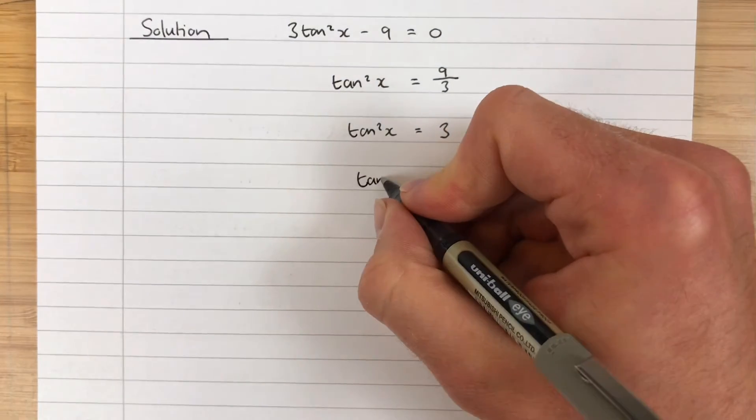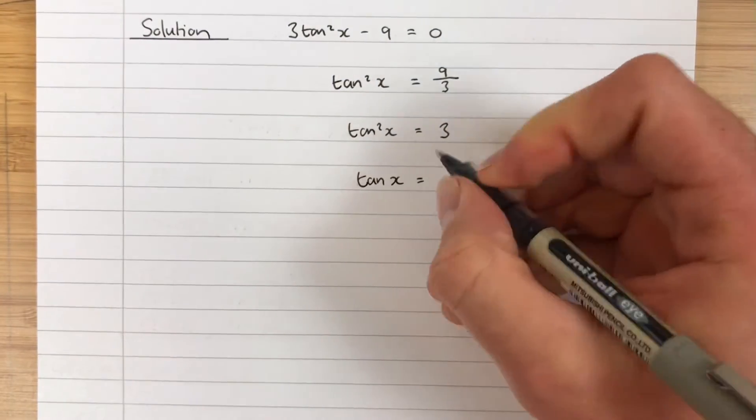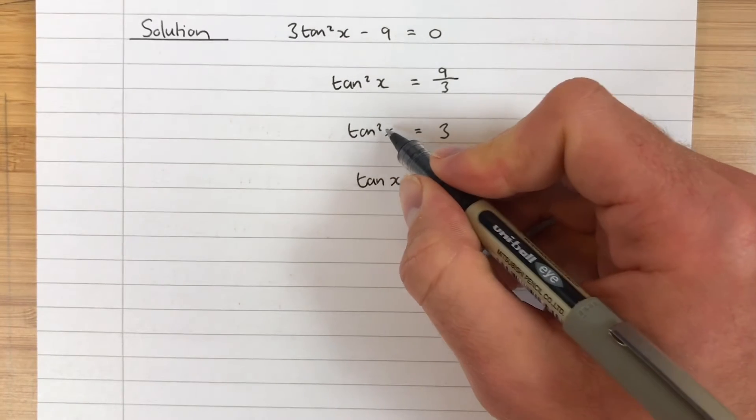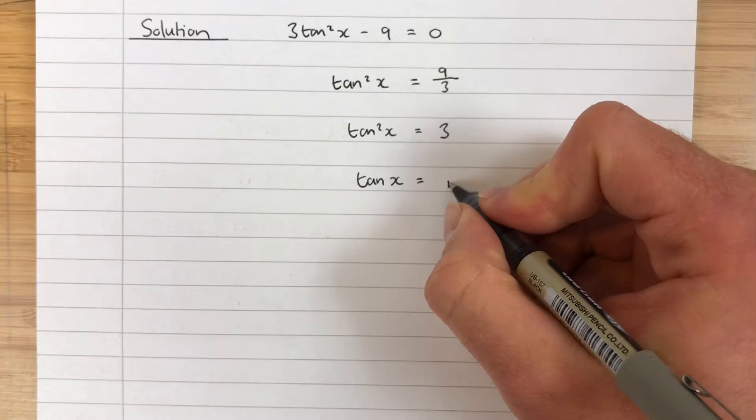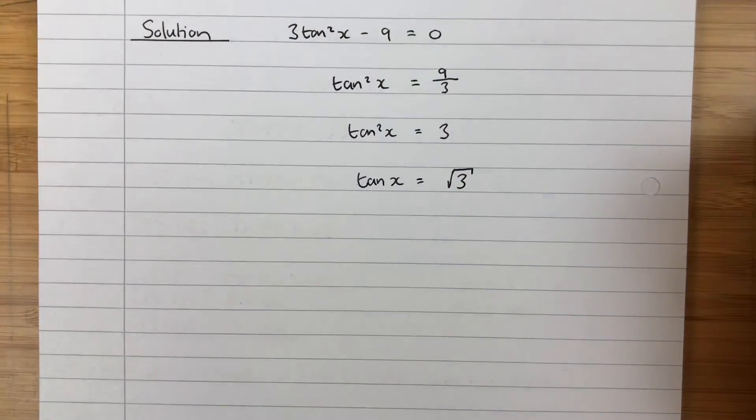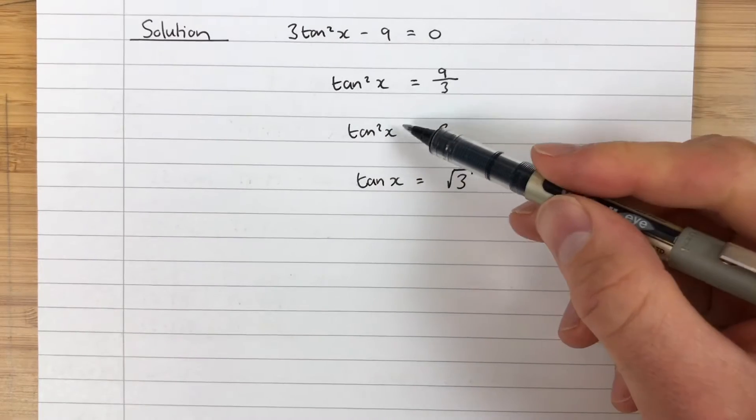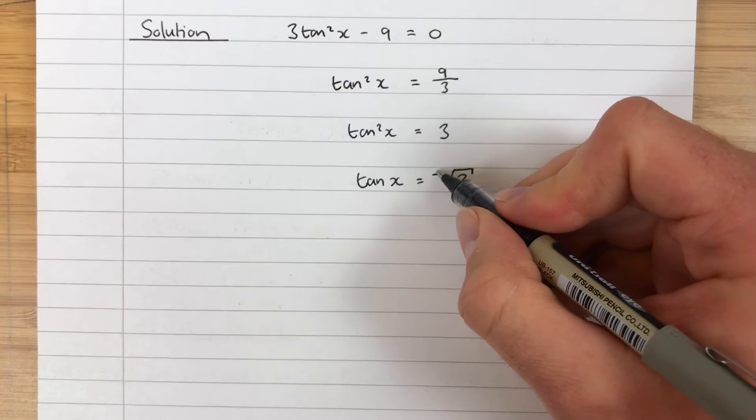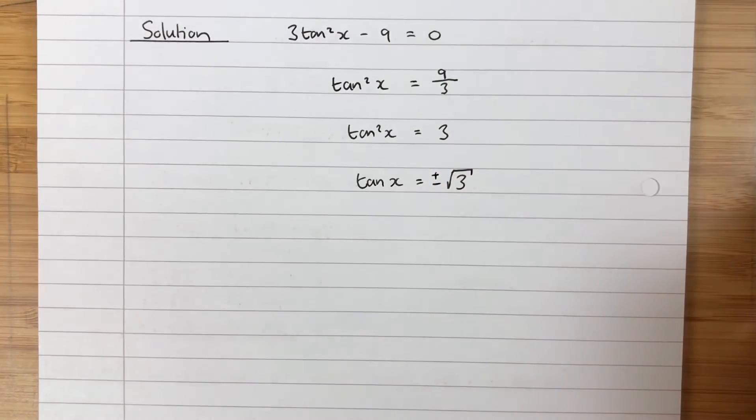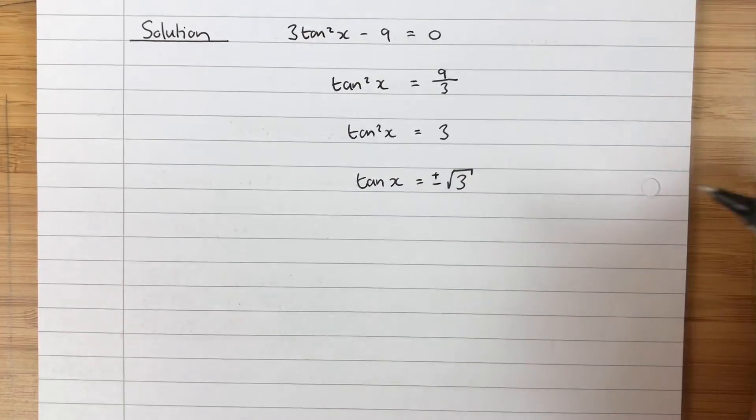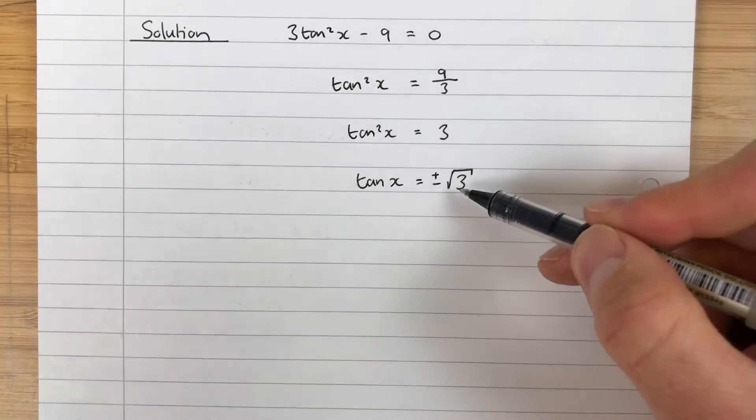But the way I can remedy that is I can do the opposite of squaring. The opposite operation to squaring is taking the square root. But in higher maths when you solve something squared equals a number, you have to remember that there's two possibilities. It could be positive root 3 or it could be negative root 3.